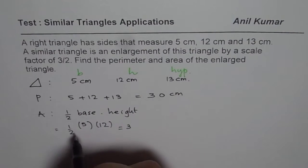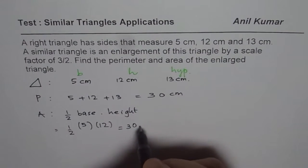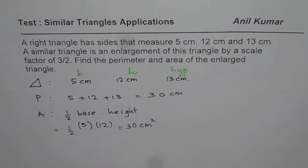So we get again the same value. That is interesting. 30 cm square. So this is for the given triangle.